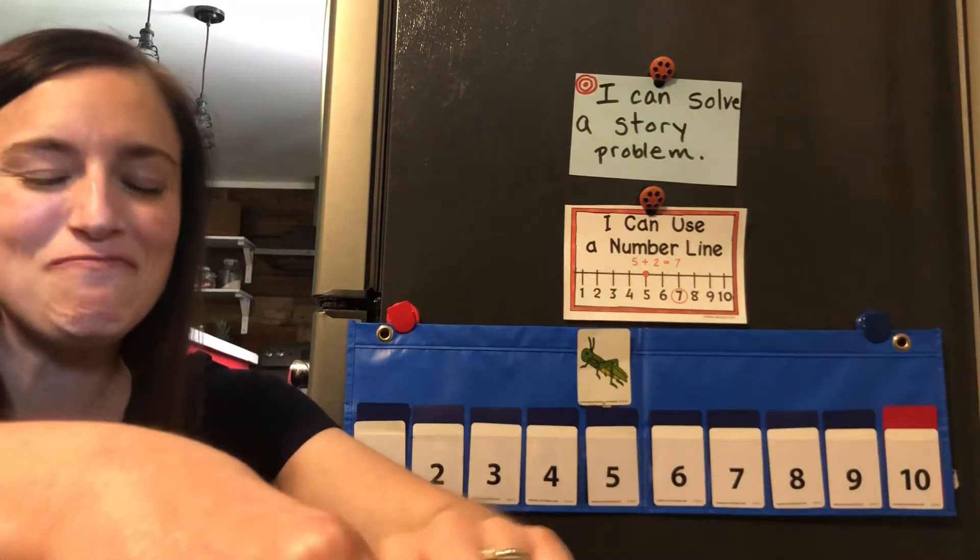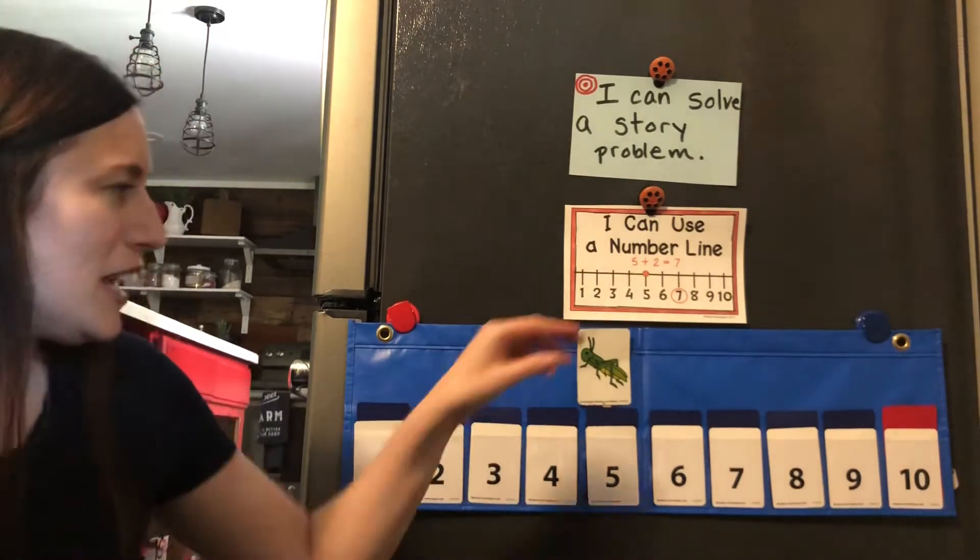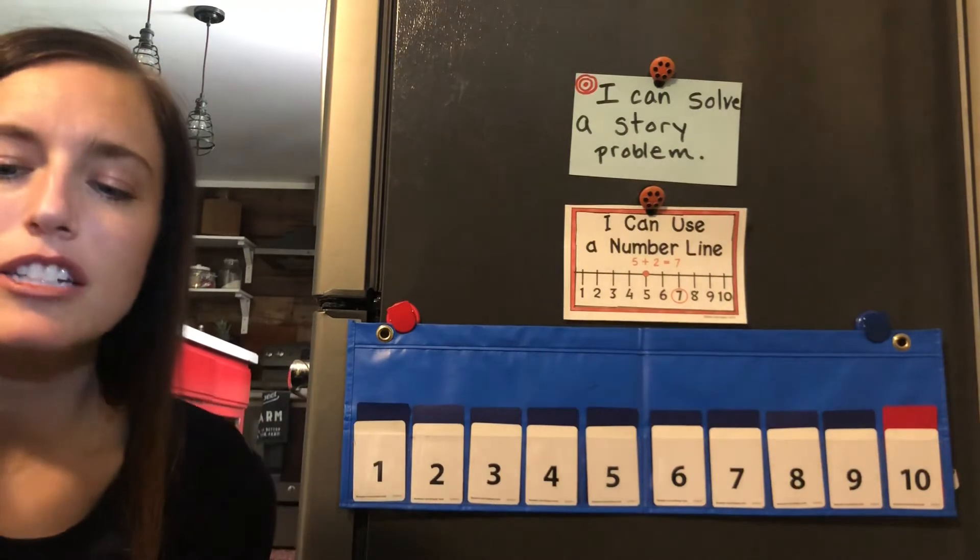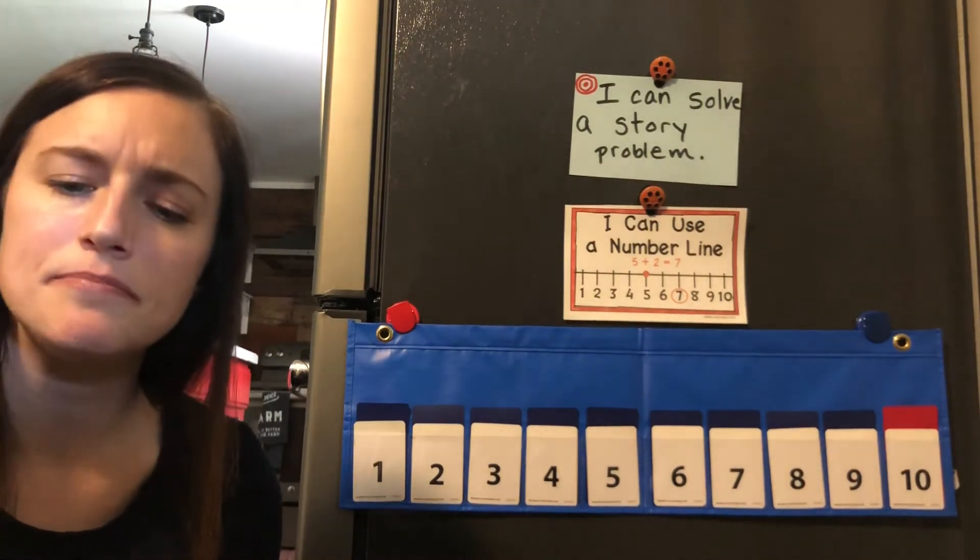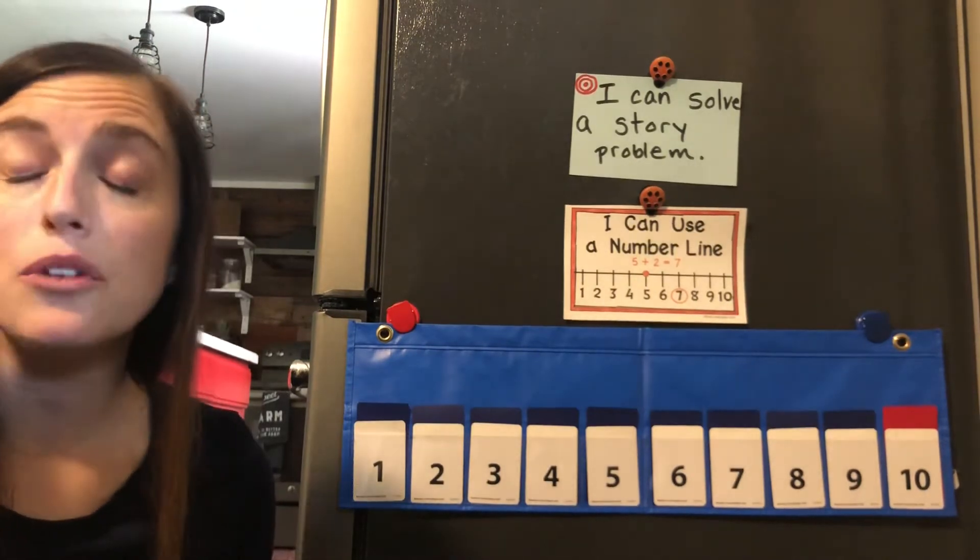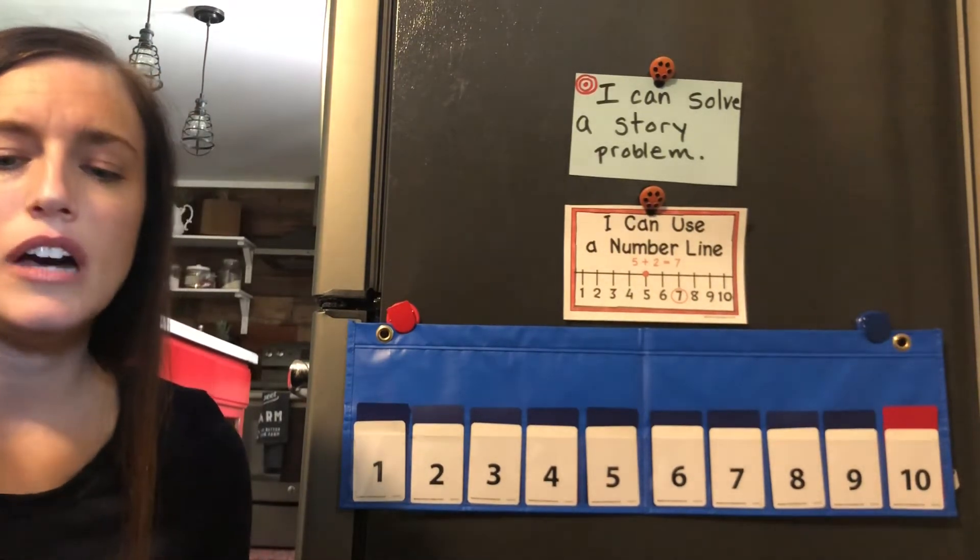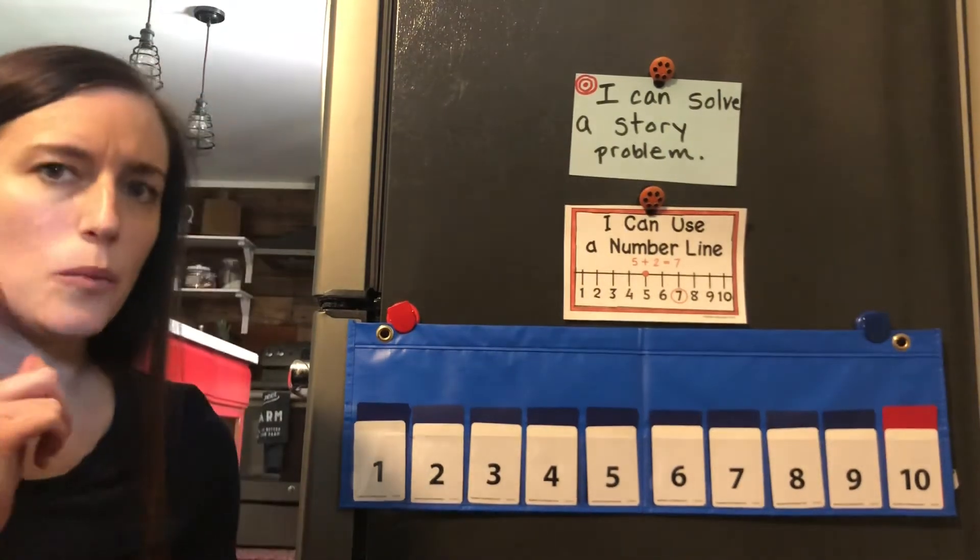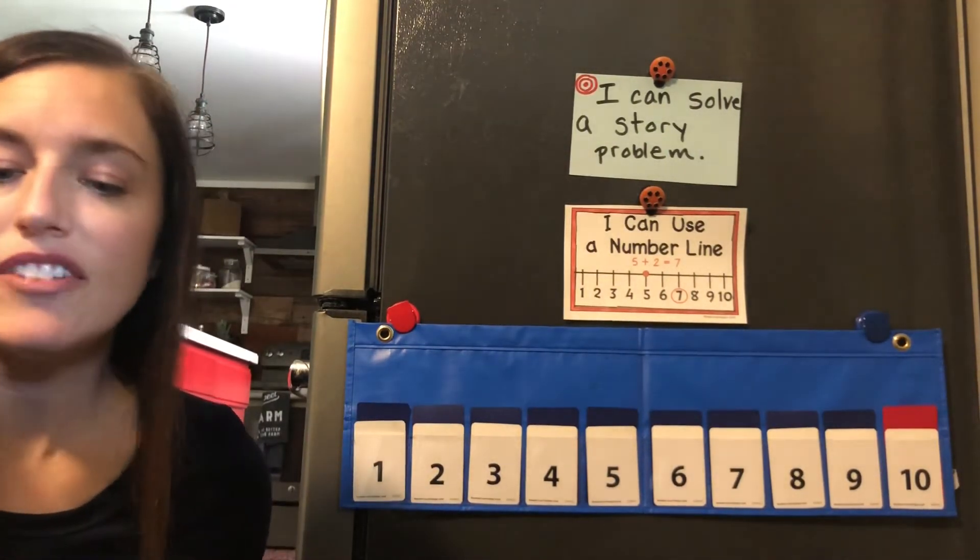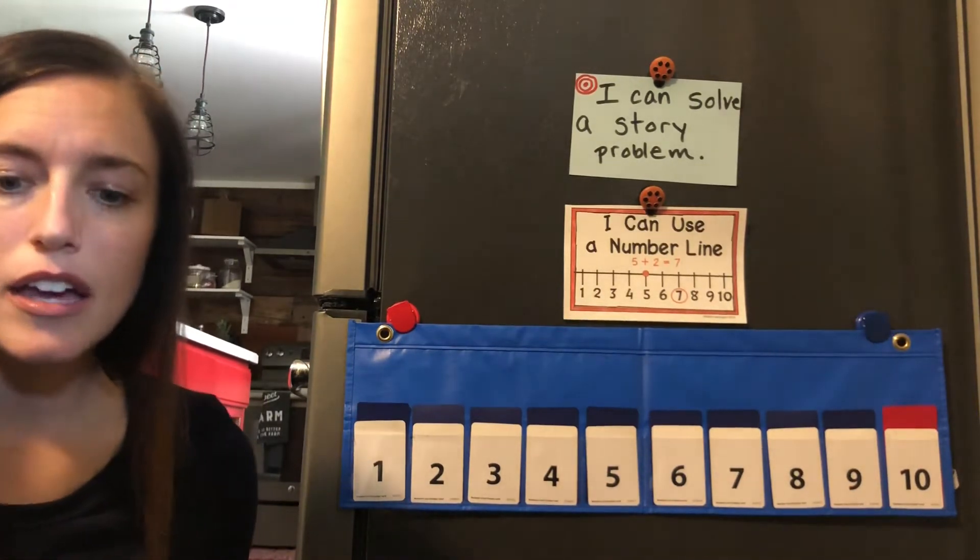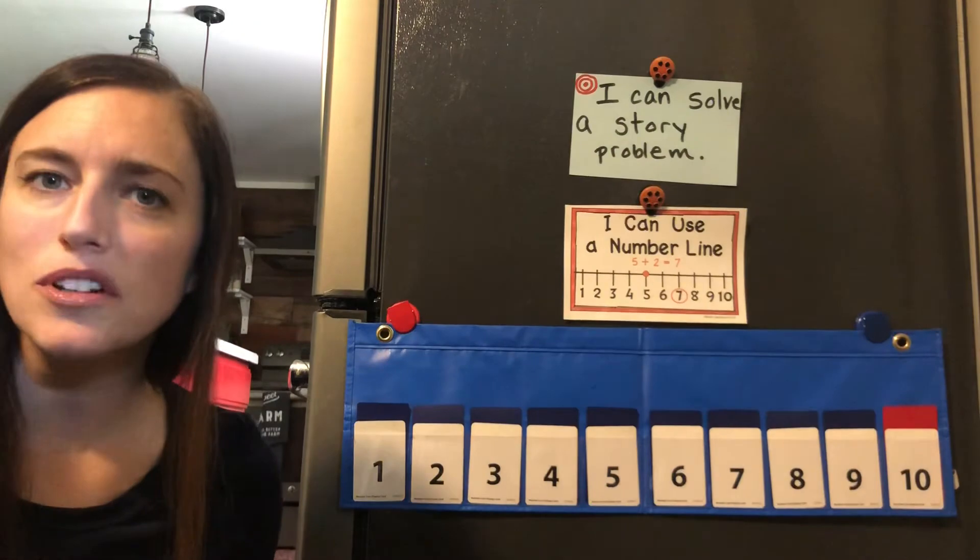Ready for the next one? Okay, Hopper, let's go back. We're going to start a new story problem. It said Max saw seven cats. Okay, two of the cats ran away. How many cats were left? I'll read it one more time. Max saw seven cats. Two of the cats ran away. How many cats were left?